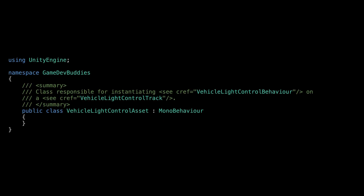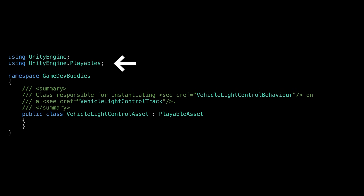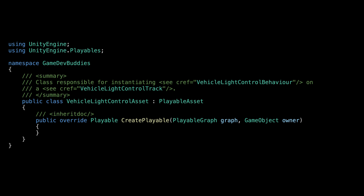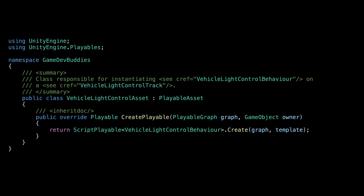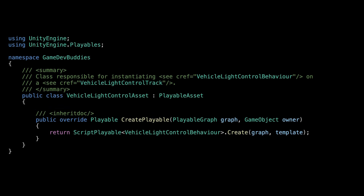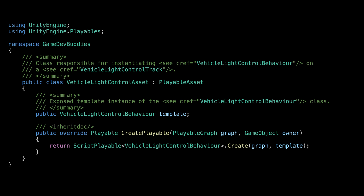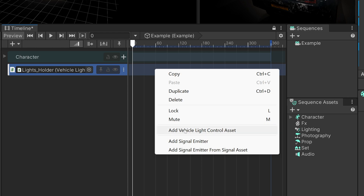Next, we need to declare VehicleLightControlAsset as a subclass of the PlayableAsset class, also defined inside the UnityEngine.Playables namespace. We need to provide an implementation of the CreatePlayable function, which is an abstract method inside PlayableAsset. Inside this function, we instantiate a new playable instance and return a reference to it using a helper static method of the ScriptPlayable class, providing a reference to the playable graph and a template of the PlayableBehavior. Declare a new public variable of type VehicleLightControlBehavior named 'template'. With that, we gain access to creating new vehicle light control clips on the track.